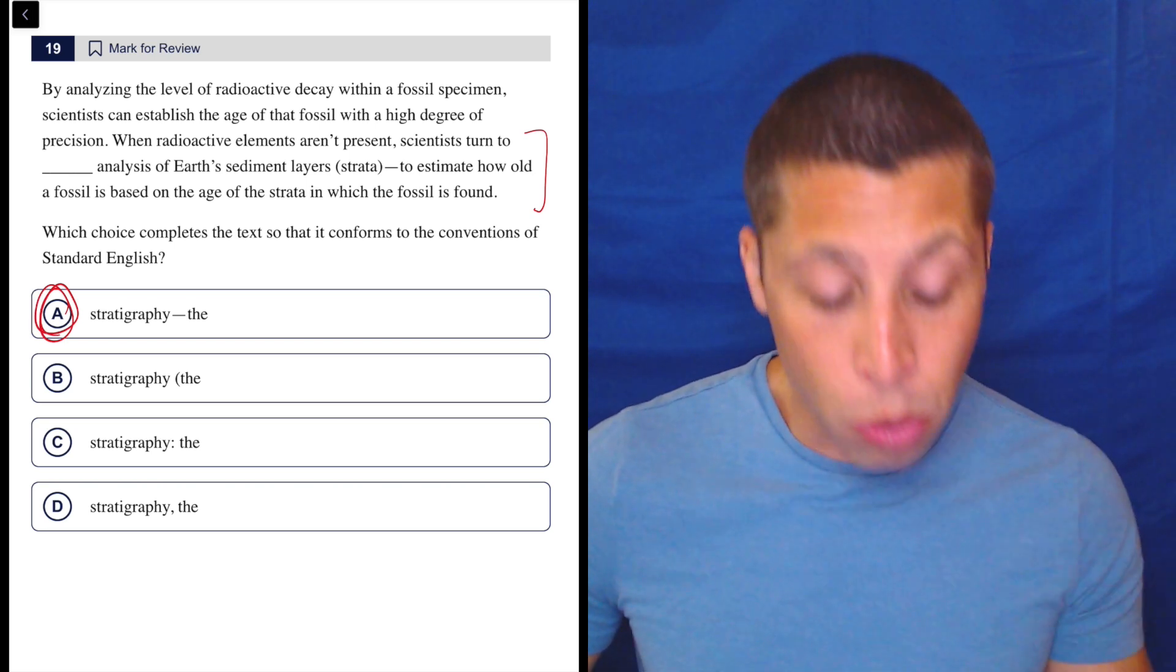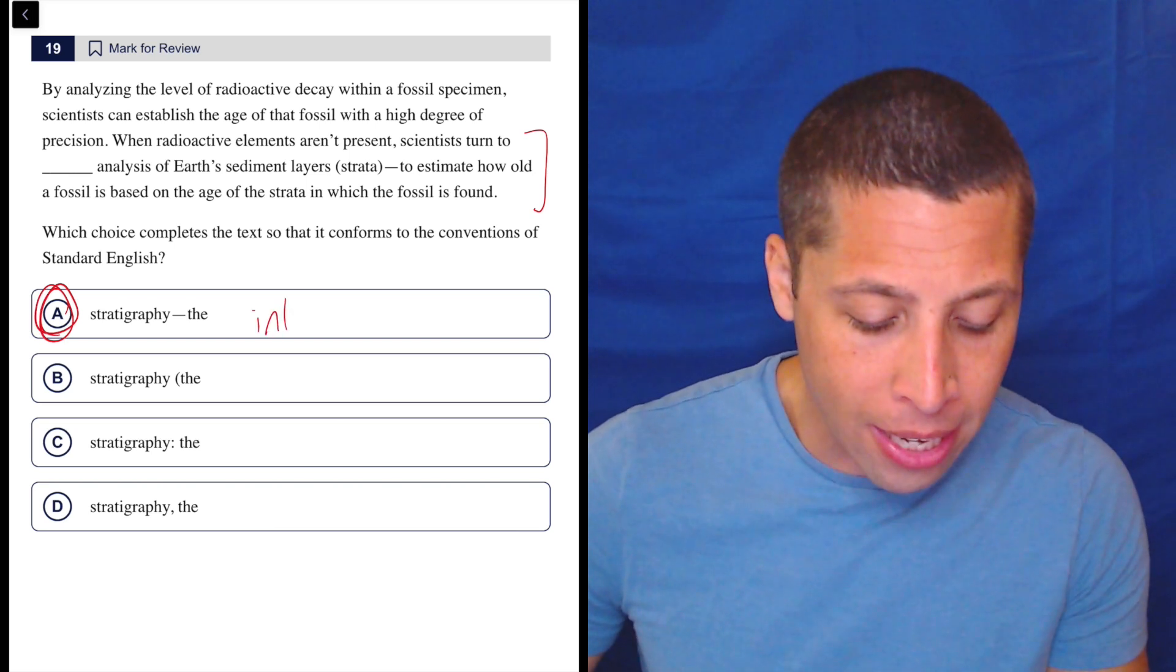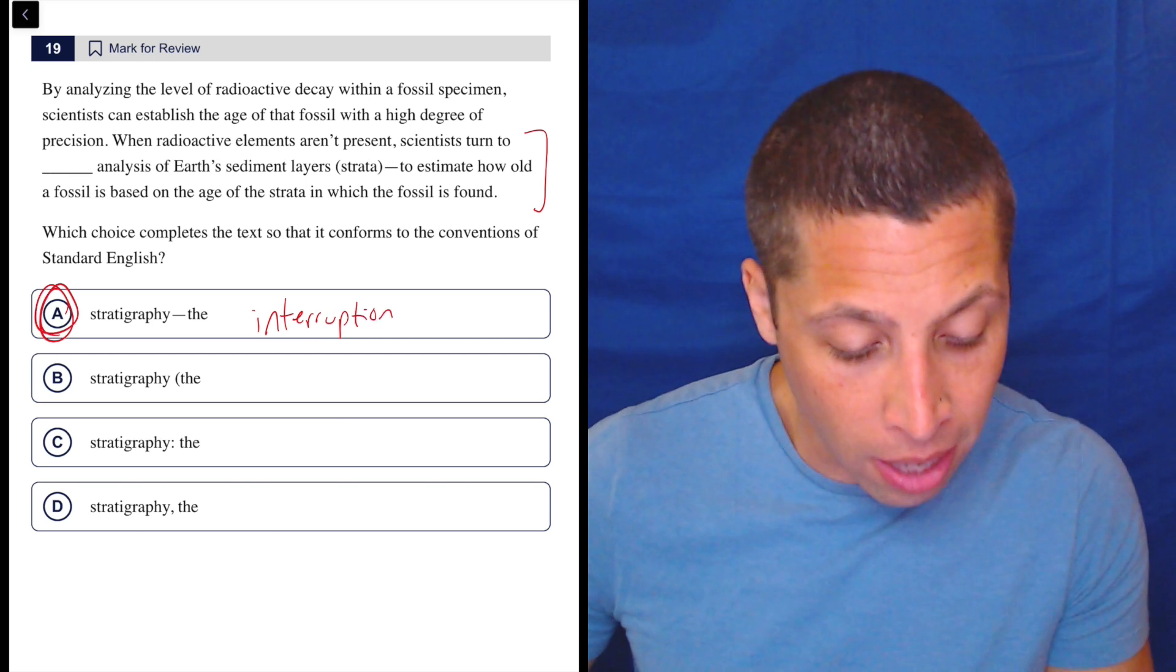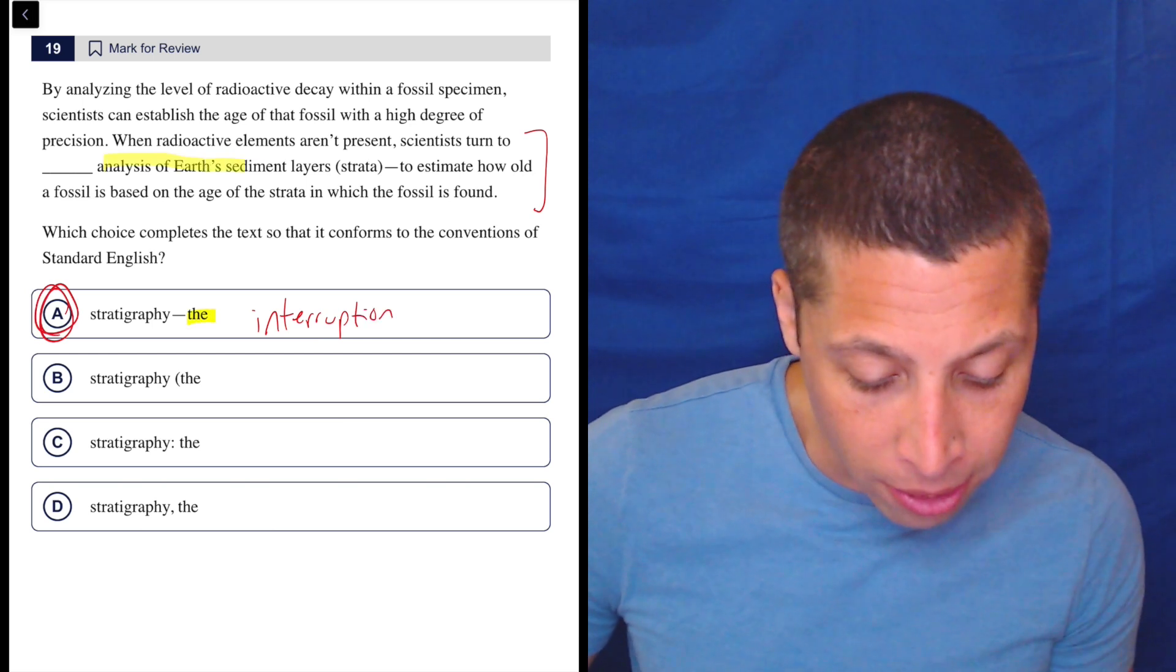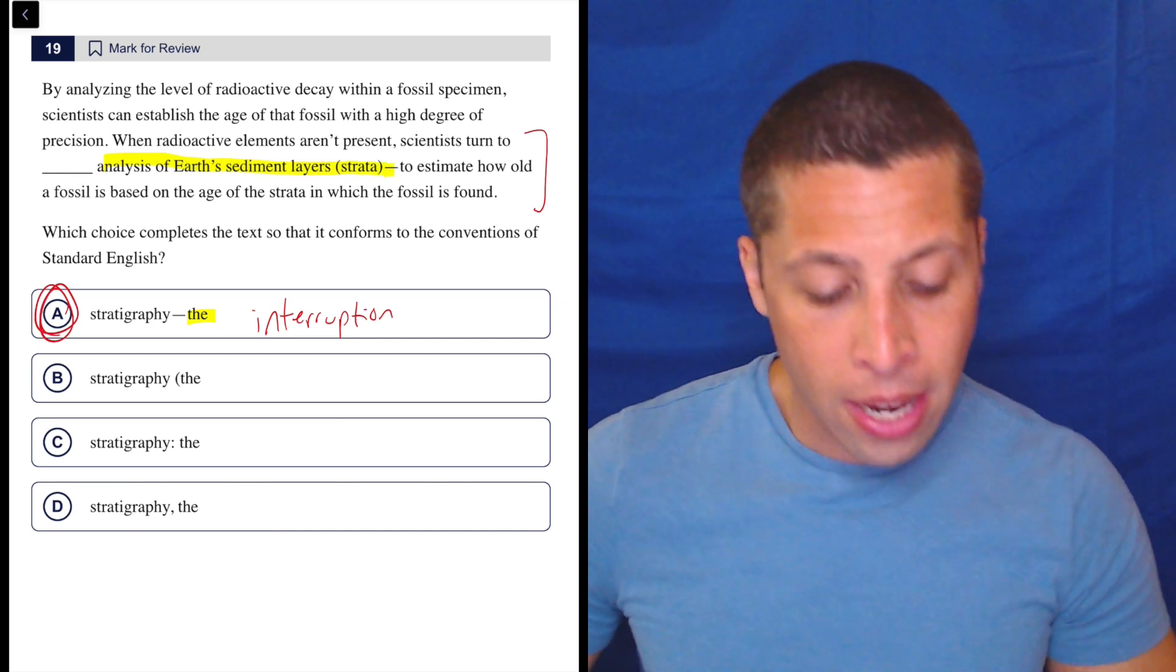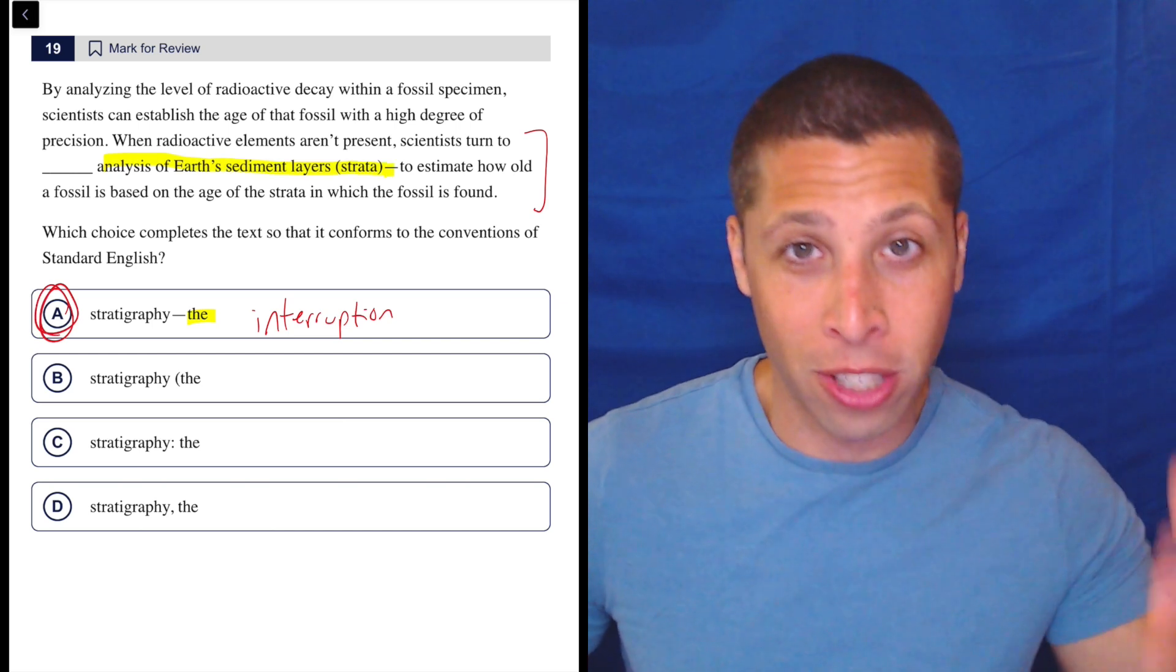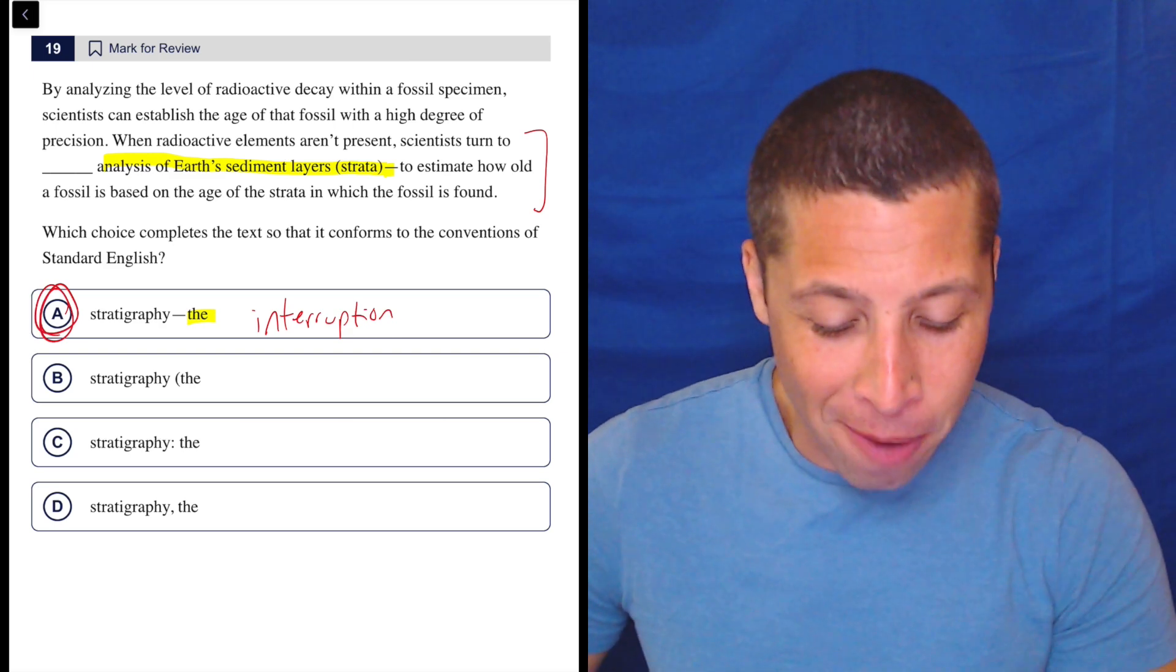Basically, we just are using two dashes to insert an interruption into the sentence, right? So this entire part I'm going to highlight from the analysis of earth sediment layers is a description of what stratigraphy is. I have no idea how to say it. Don't care.